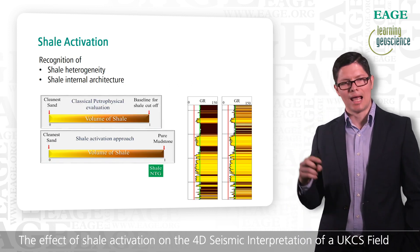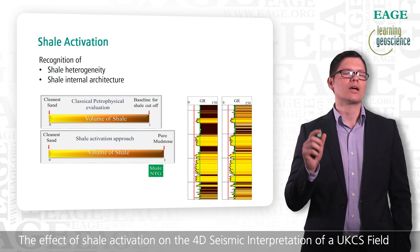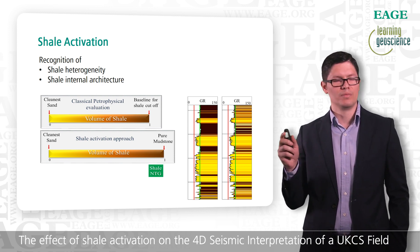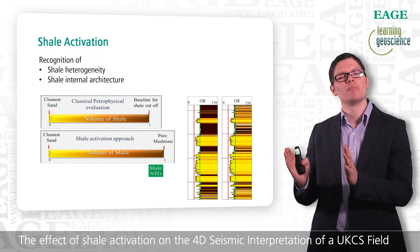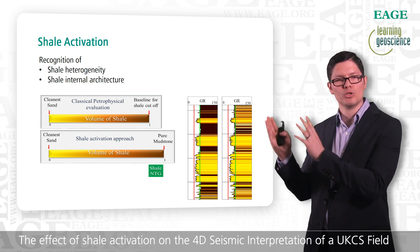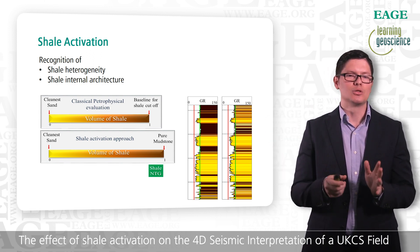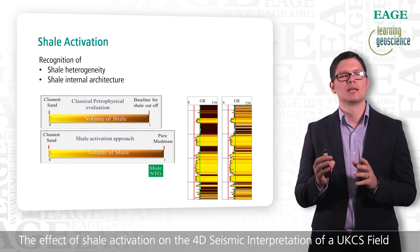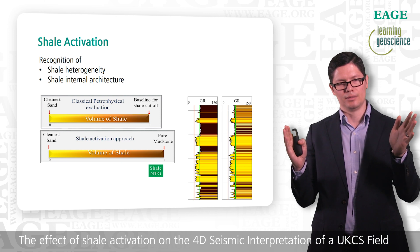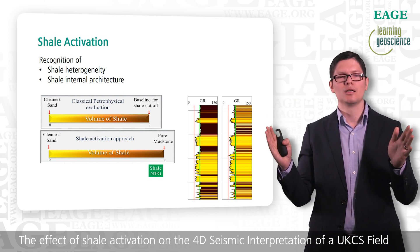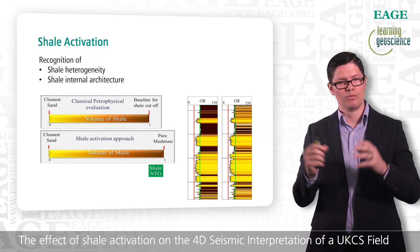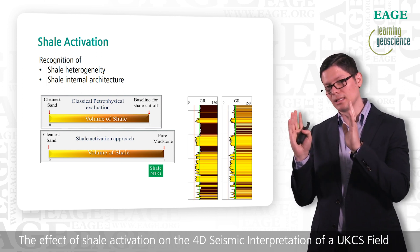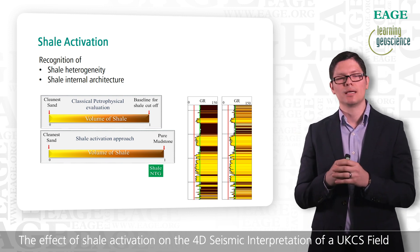The first step into the shale activation workflow is to recognize the internal architecture of the shale and the heterogeneity below the petrophysical definition of cutoff. If the end member of the shale is moving to a truly pure mudstone, there is a lot of heterogeneity — laminations of silt and laminations of clays within the shale. That space between the typical definition of the shale end member and the truly mudstone line gives you a full range of heterogeneity. These heterogeneities constitute preferential permeability paths that, even when they cannot allow fluid flow during the production lifetime, can allow pressure diffusion.